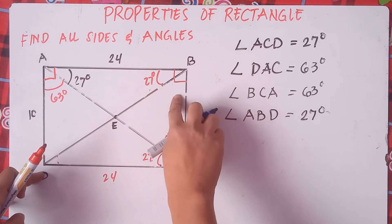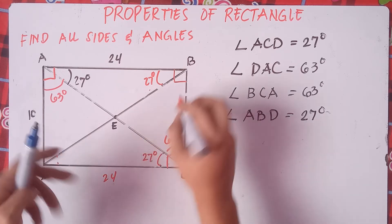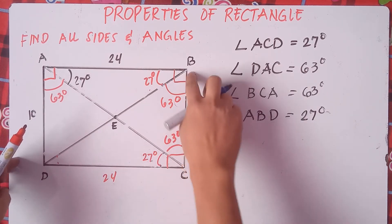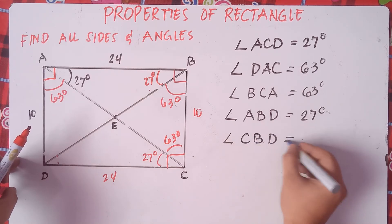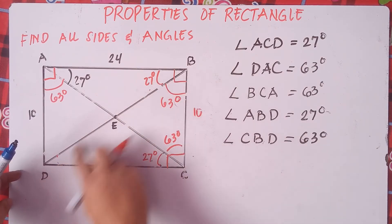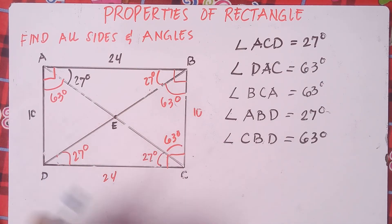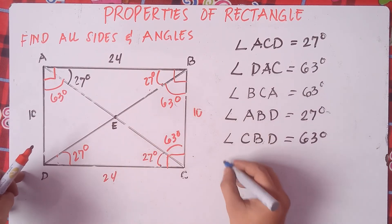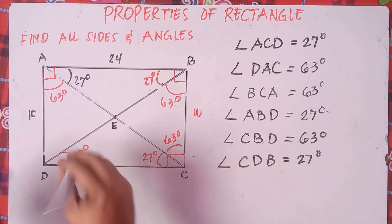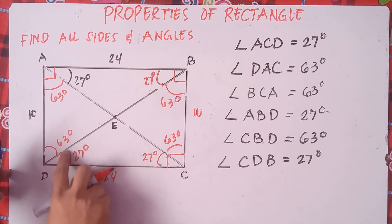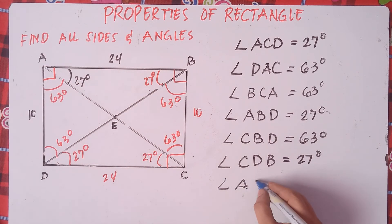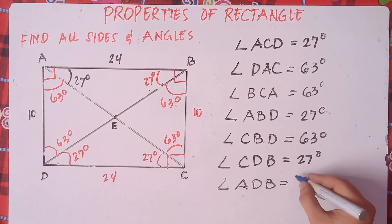If angle ABD is 27, then the remaining part must be 63 degrees, because 27 plus 63 equals 90. So angle CBD is equivalent to 63 degrees. Similarly, angle CDB is equivalent to 27 degrees, and by the same reasoning angle ADB is equivalent to 63 degrees.